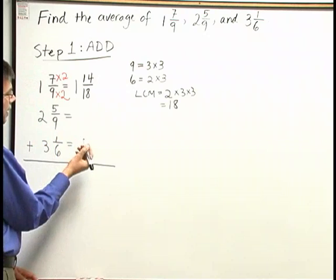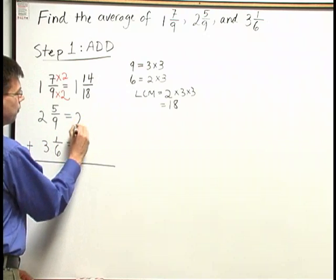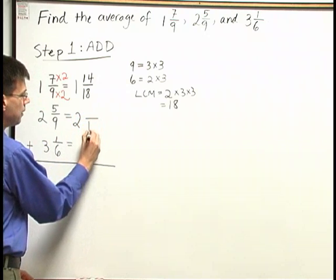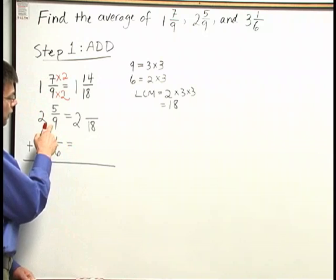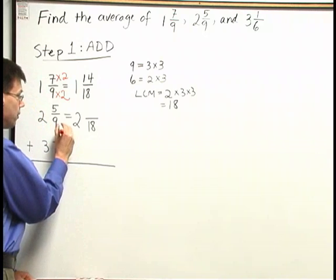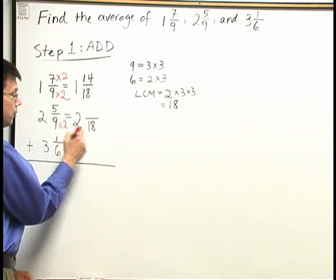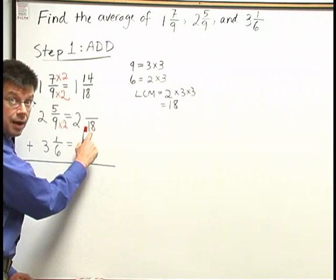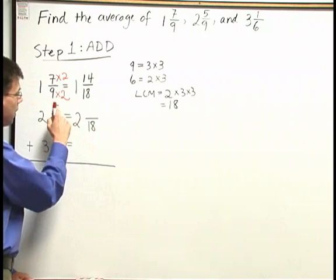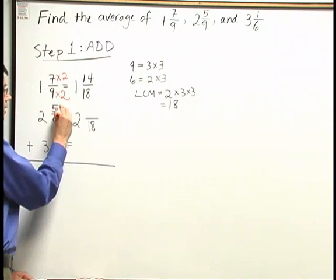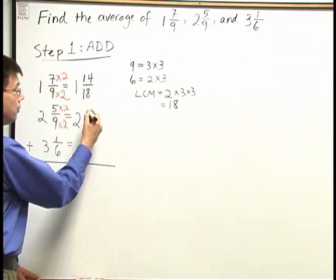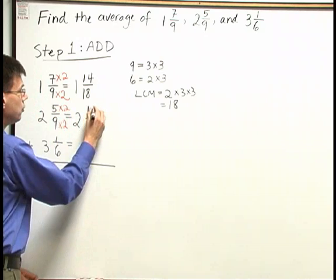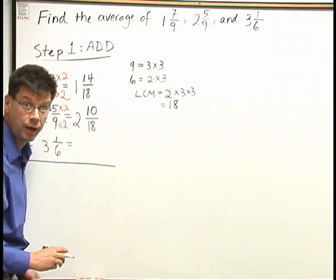Two and five ninths, I'm going to rewrite as two and so many eighteenths. It also has denominator nine, so nine times two will give me the common denominator eighteen. Up above in the fraction, I also multiply by two. Five times two will give me ten. Again, two and ten eighteenths is what I have here.